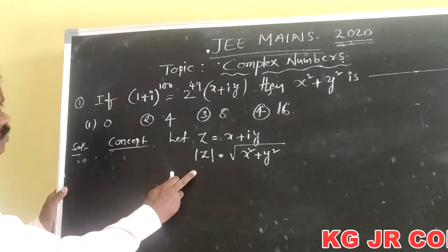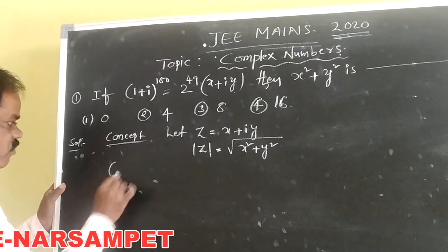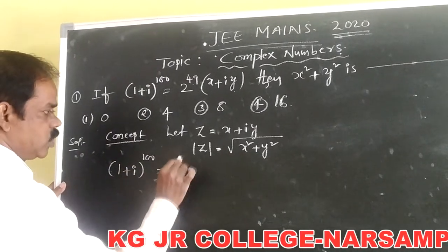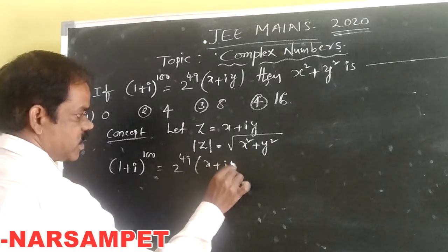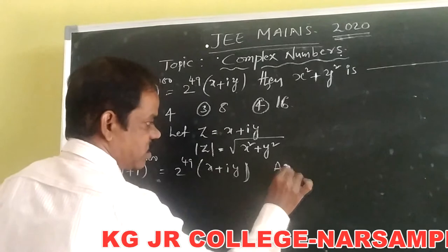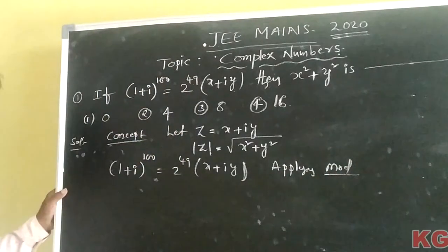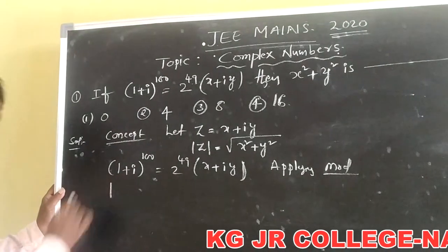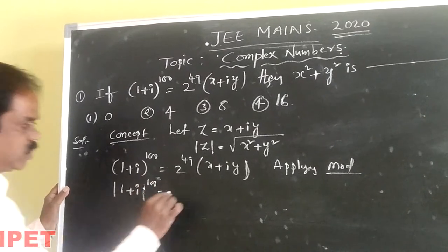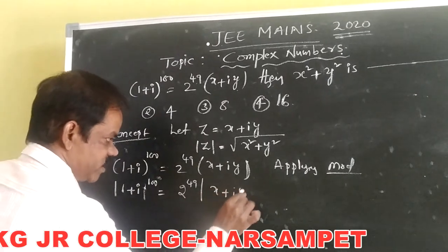Using this concept, we can solve this problem very easily. First, we take (1 + i) to the power of 100 equal to 2 to the power of 49 times (x + iy). Now, apply the modulus function on both sides. Therefore, modulus of (1 + i) to the power of 100 equals 2 to the power of 49 times modulus of (x + iy).